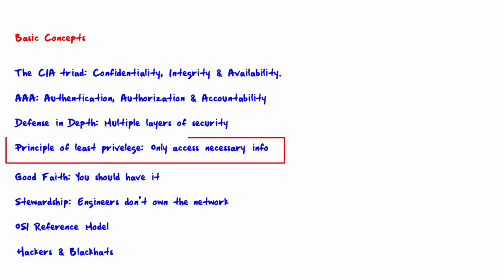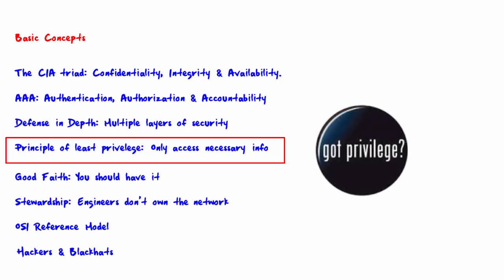The next concept is the principle of least privilege, which means you should only be able to access necessary information. A user must only be able to access information on the network that is necessary to do their job. Likewise, a process must only be able to access the network resources that it needs to perform its legitimate services.